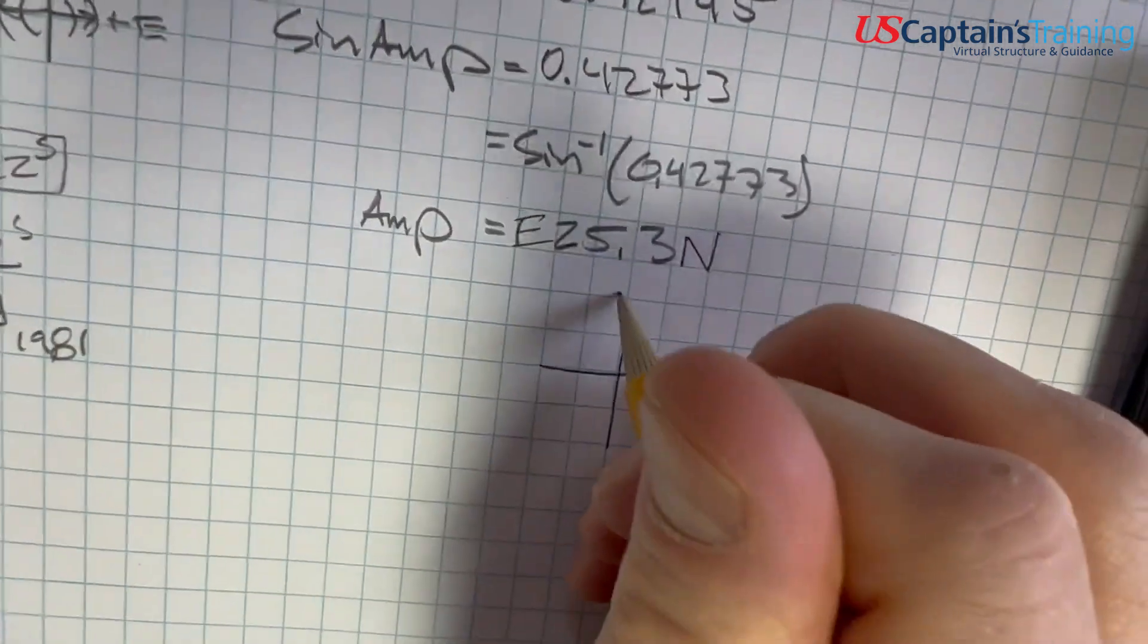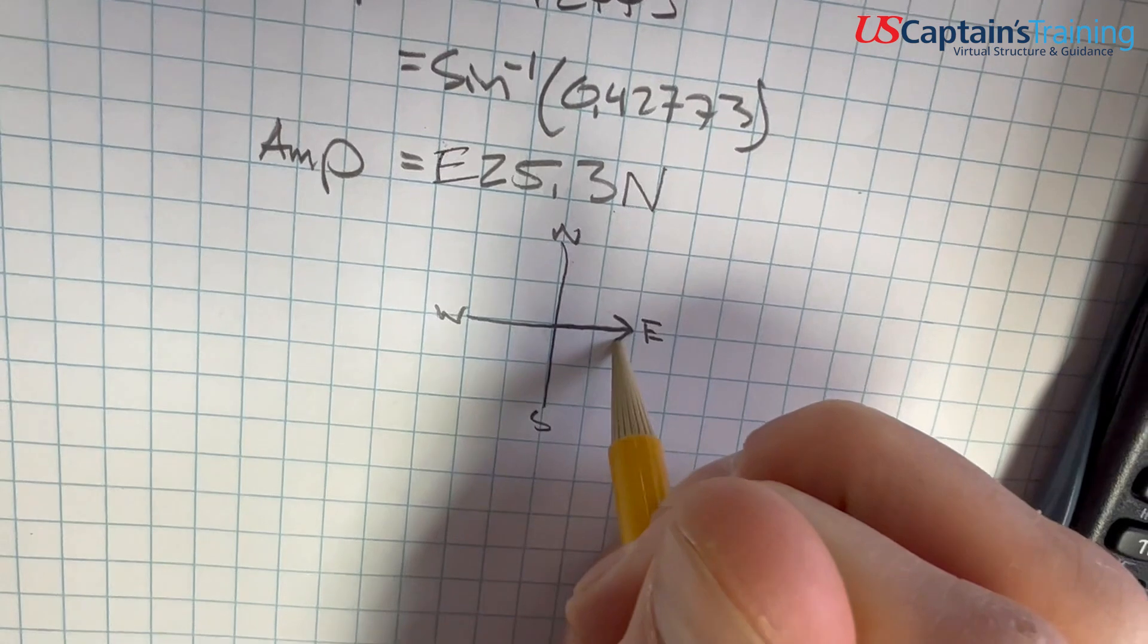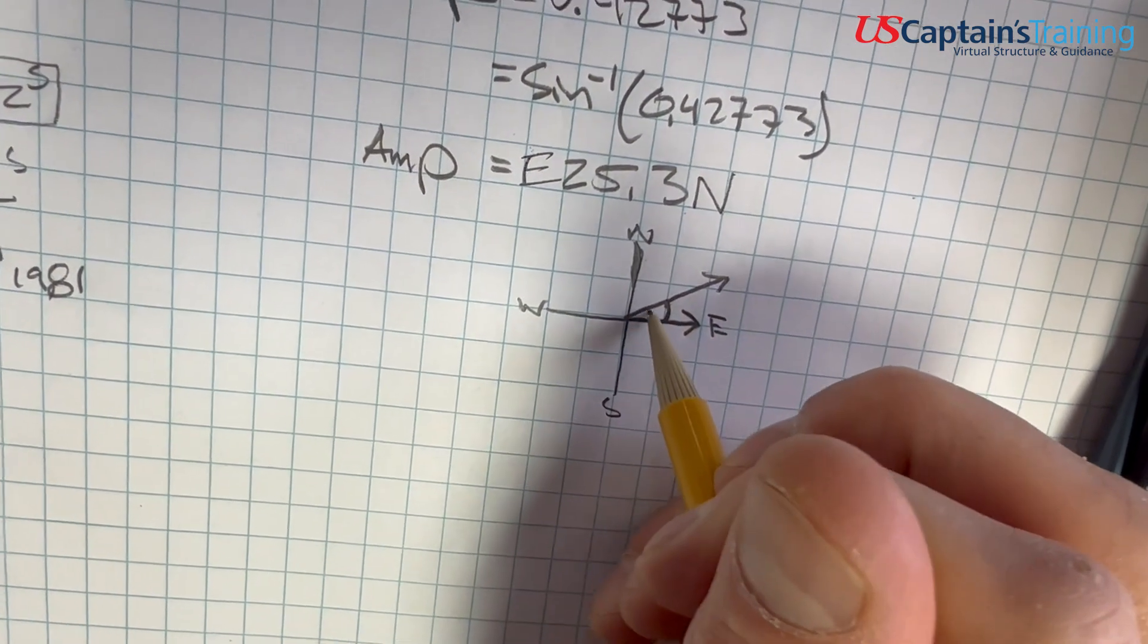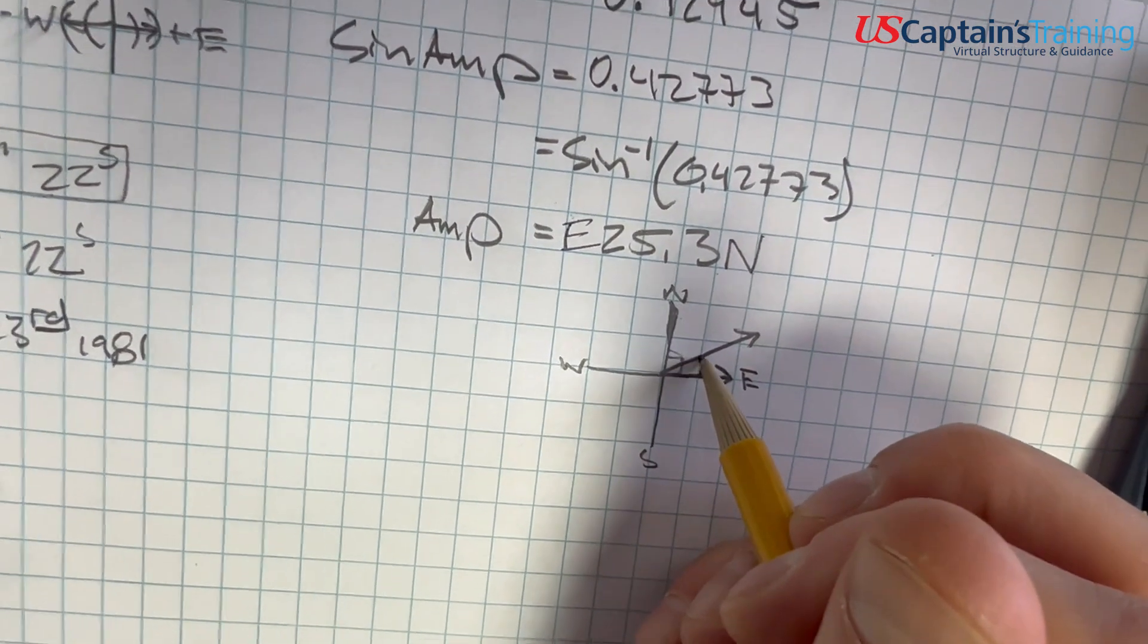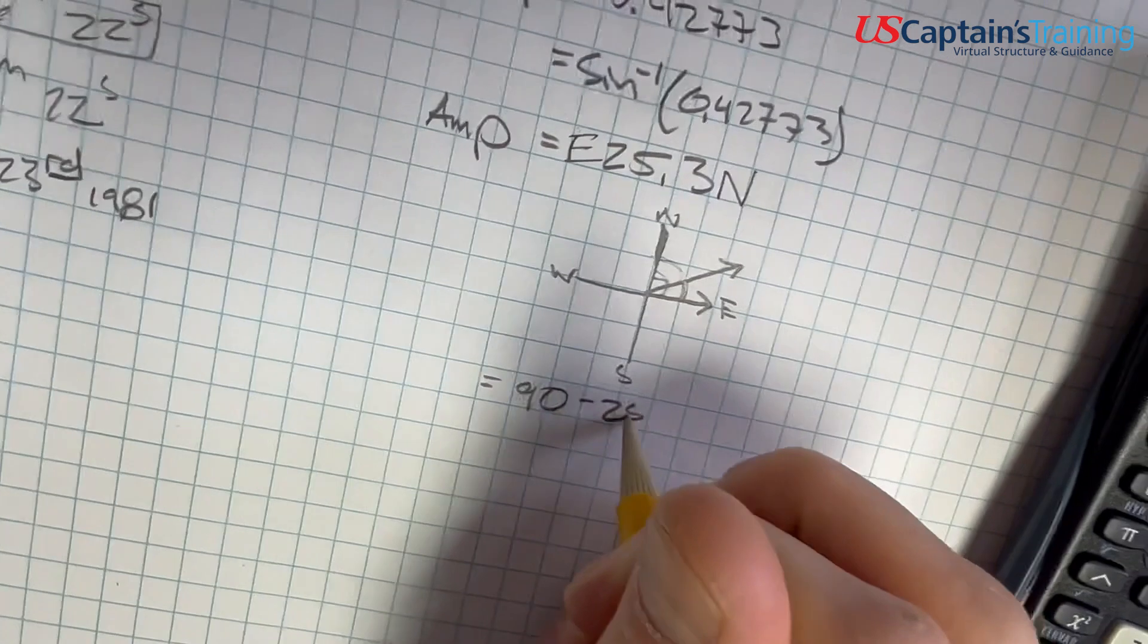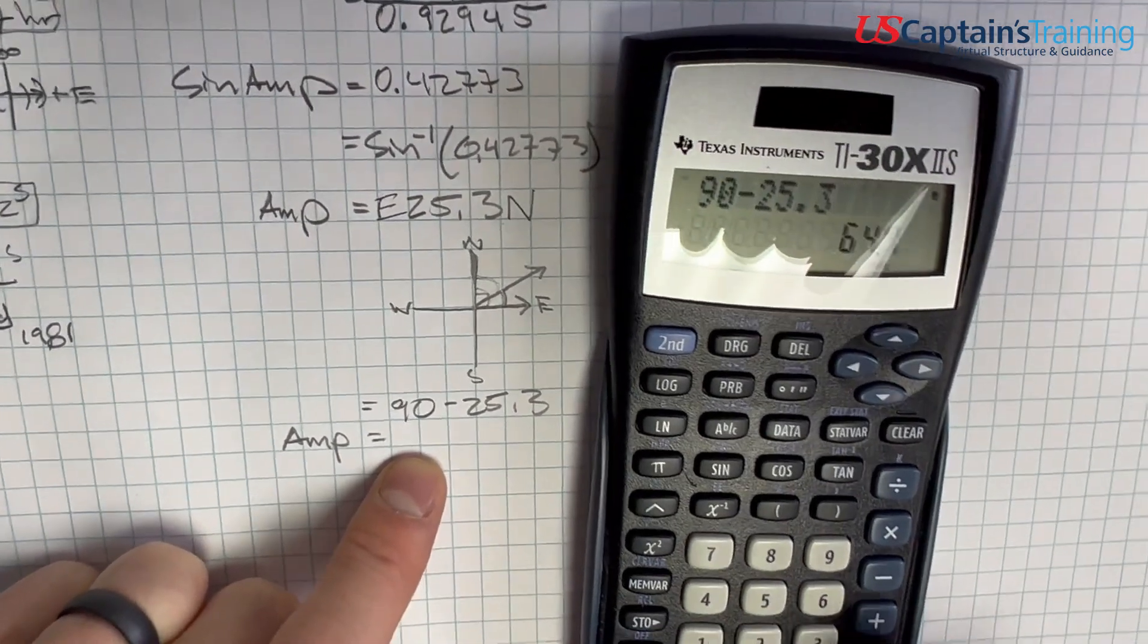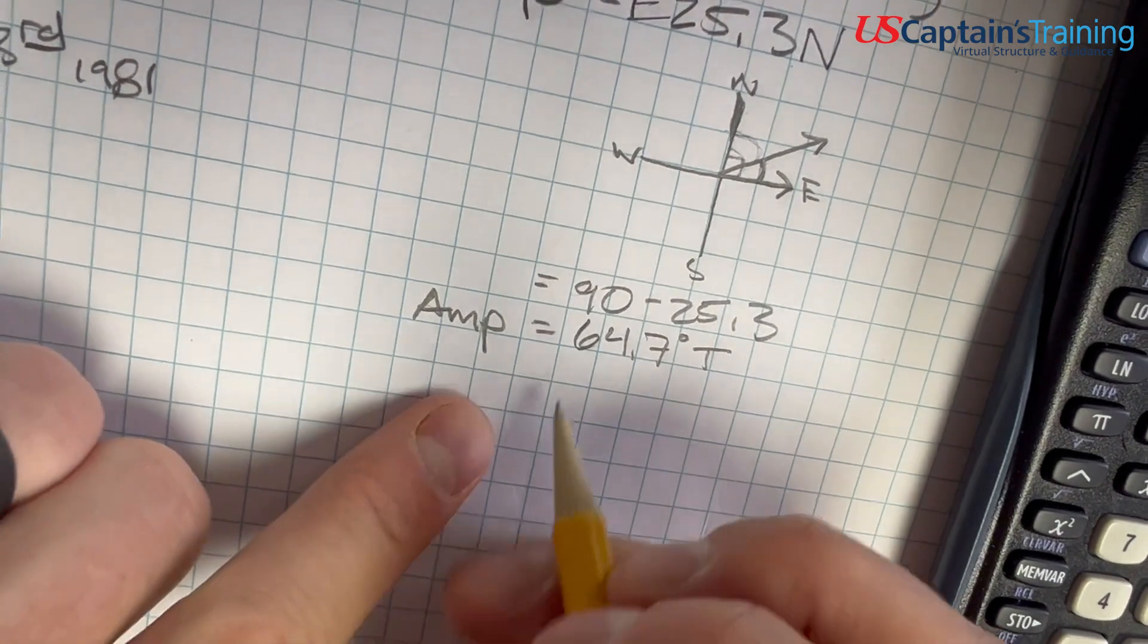We need to figure out our amplitude in degrees true. So it has to be from north. We make a little graph here: north, south, east, west. It makes it easier to figure out. First, we're east, and now we're north of east, we're up here. So this is where we are. We need to figure out how many degrees from north. We take this 90 degrees here and subtract this number. So 90 minus 25.3 will give us this angle. This equals 90 minus 25.3 equals 64.7 degrees true. And now we can put this into our compass correction.